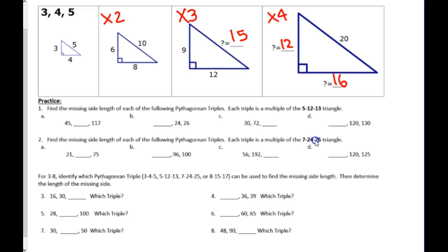Same thing down here. 7, 24, 25. That's 7. That's 21. Multiplier, figure it out. Figure out the missing one.